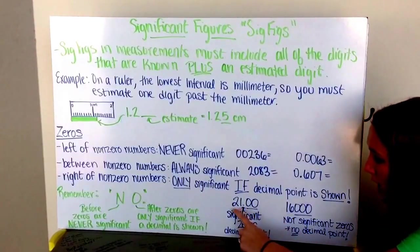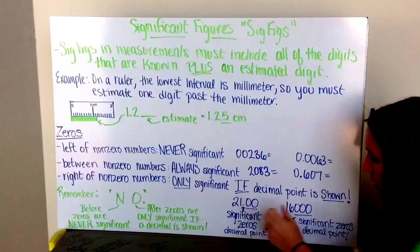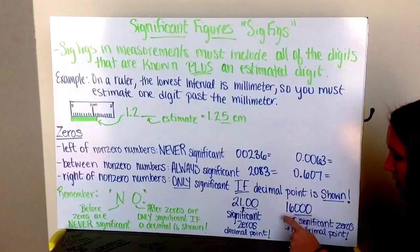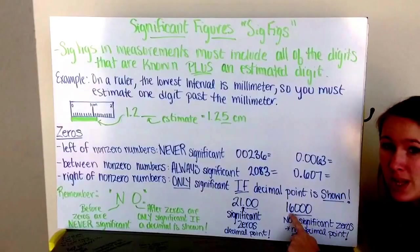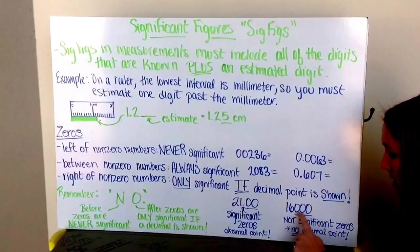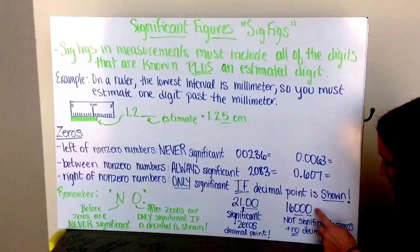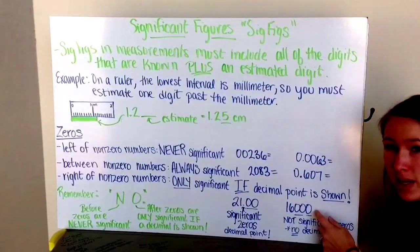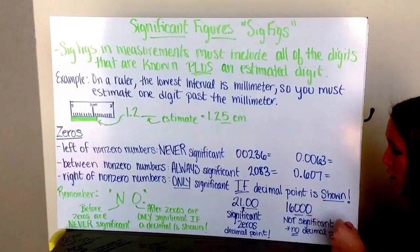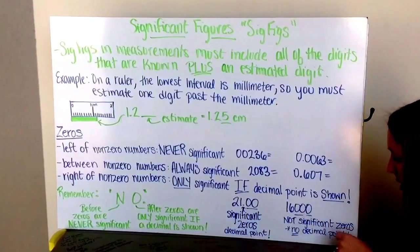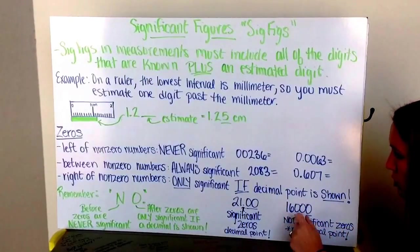This decimal point tells me I could measure exactly this far, so here I have 1, 2, 3, 4 significant figures. Now my measurement here, my 16,000, this tells me that I could only be accurate to the thousandths place. These zeros here tell me that they were not significant because there's no decimal point here. By putting a decimal point here, it would tell us that they are significant. There's no decimal point, so they're not significant. So here we only have 2 significant figures.